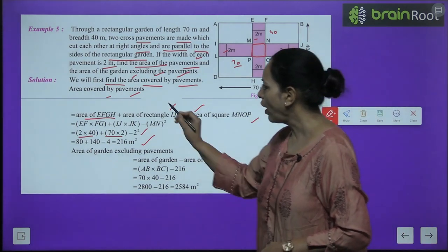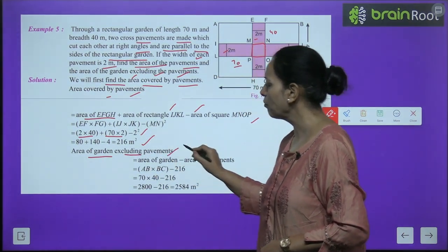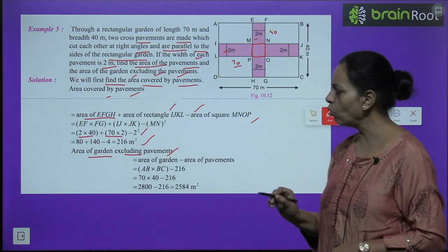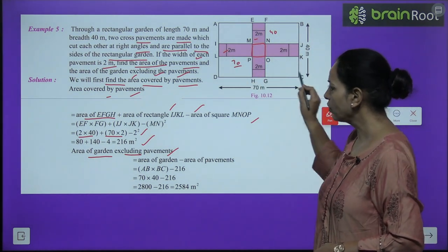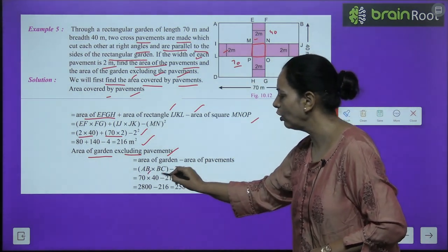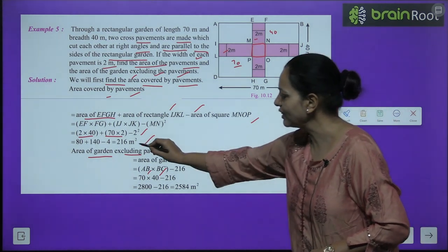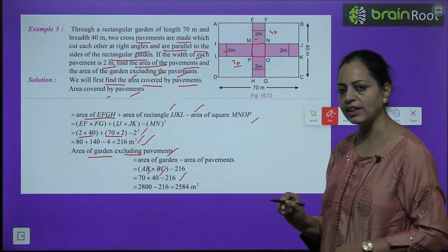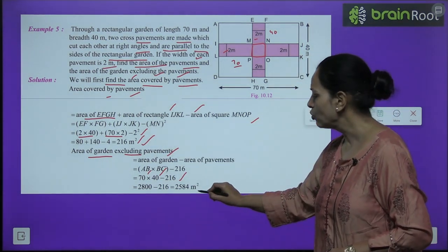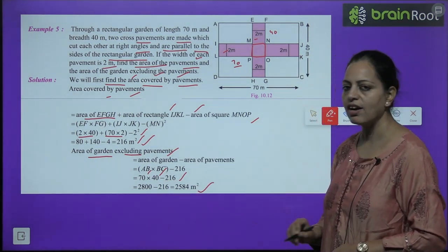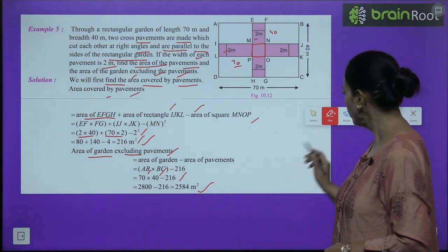Area of garden excluding paths = total garden area − area of paths = 70 × 40 − 216 = 2800 − 216 = 2584 m².